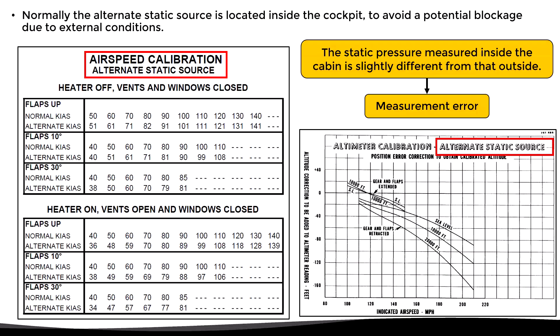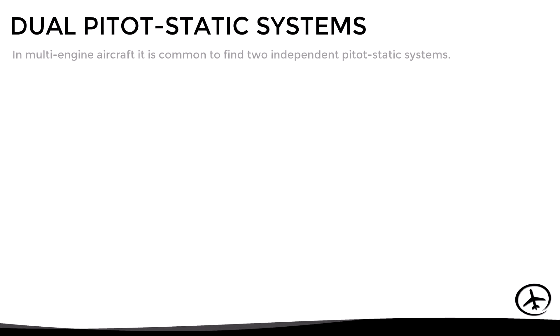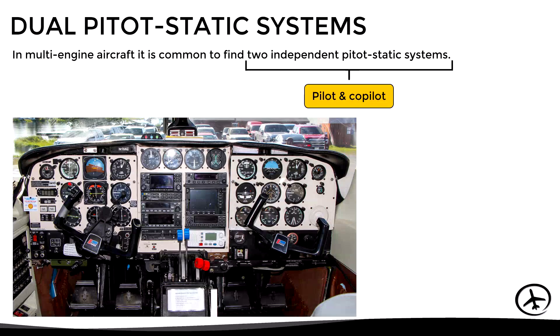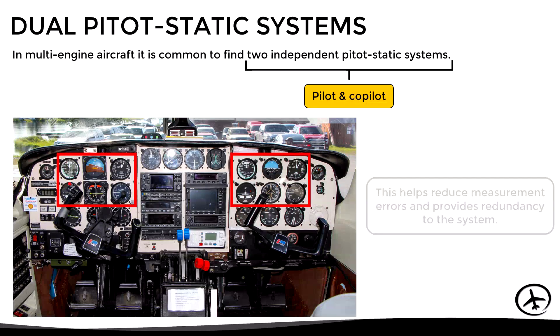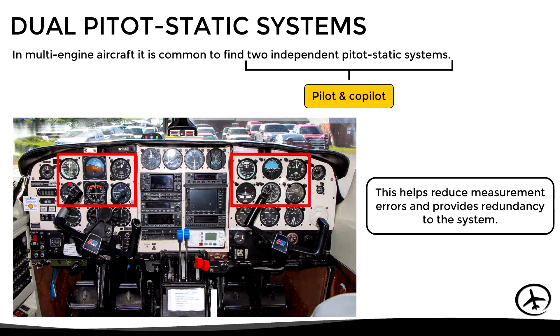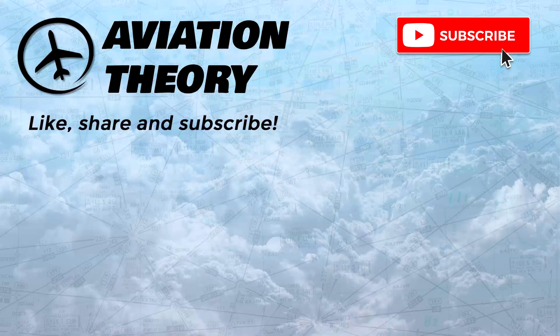One final point: in multi-engine aircraft it is common to find two independent pitot-static systems — one for the pilot's instruments and the other for the copilot's instruments. This design is quite beneficial as it reduces measurement errors and provides redundancy, since the instruments on one side can be compared with those on the other side to check how much difference they have or if some kind of problem is occurring. This procedure is known as a cross-check.